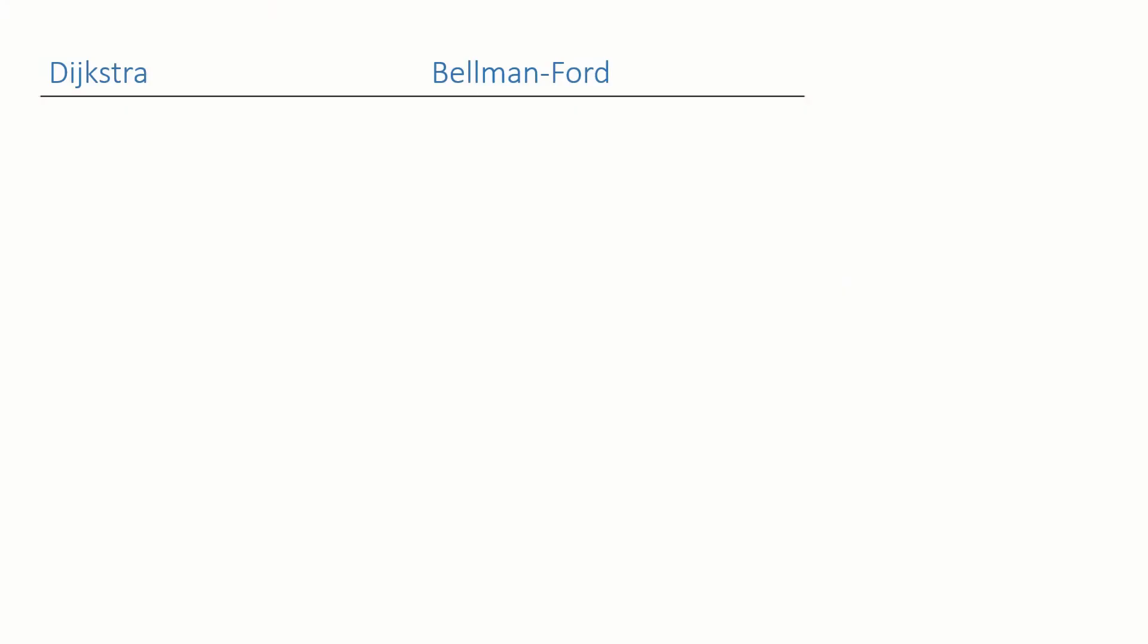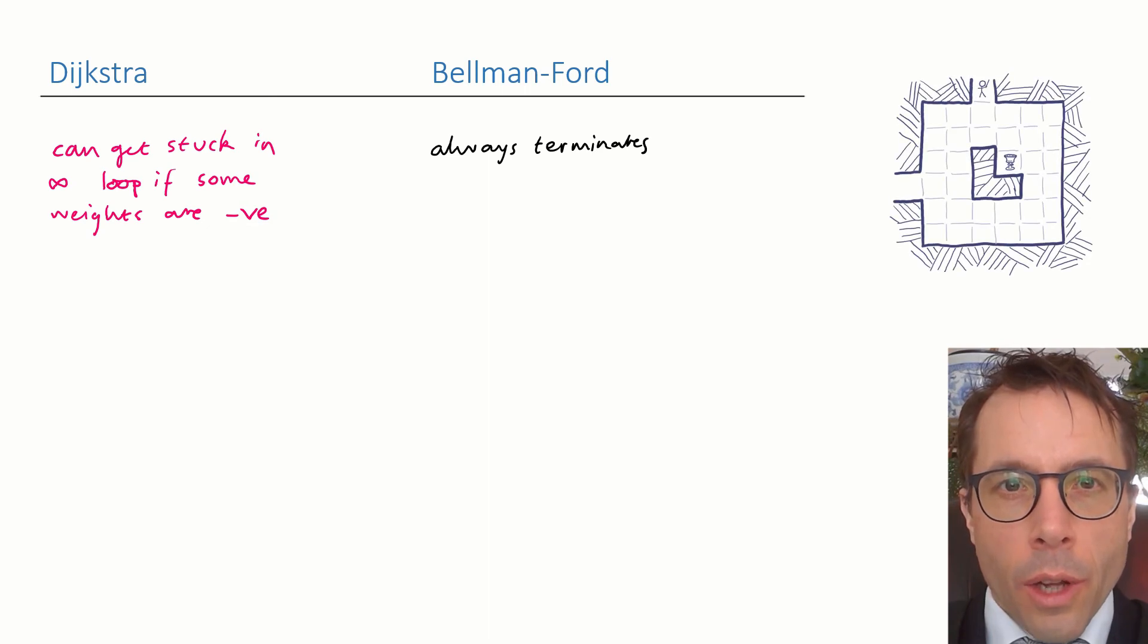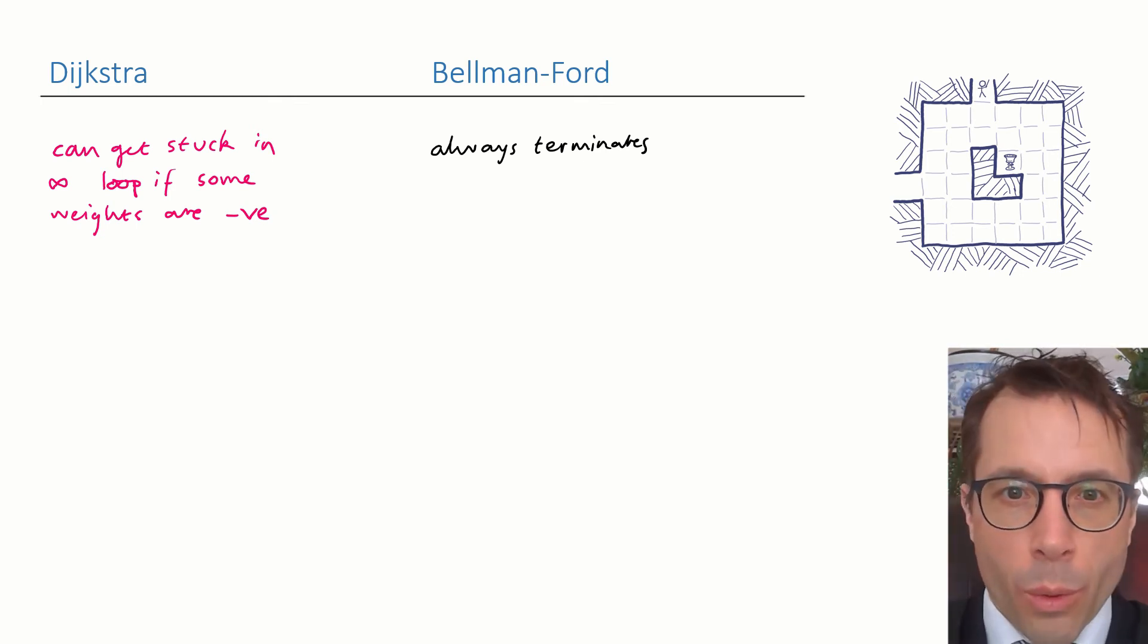We've been studying two algorithms for finding shortest paths, Dijkstra's algorithm and the Bellman-Ford algorithm. We noted that Dijkstra's algorithm can get stuck in an infinite loop if some of the edge weights are negative, whereas the Bellman-Ford algorithm always terminates. And the reason we're interested in negative edge weights is because they let us solve all sorts of planning problems, like deciding whether or not to pick up the potion on your way through a dungeon.